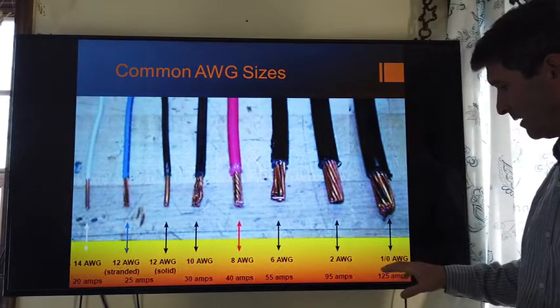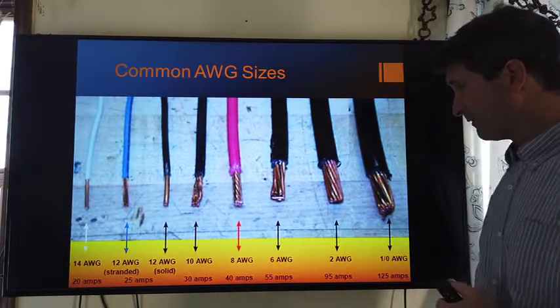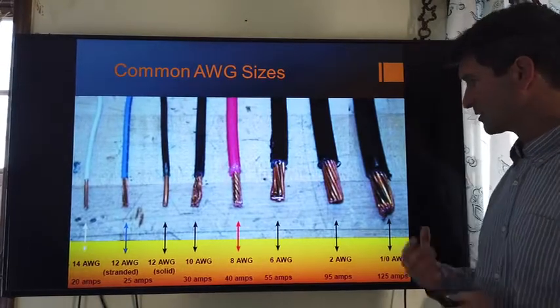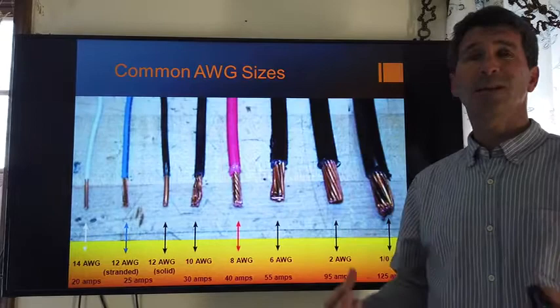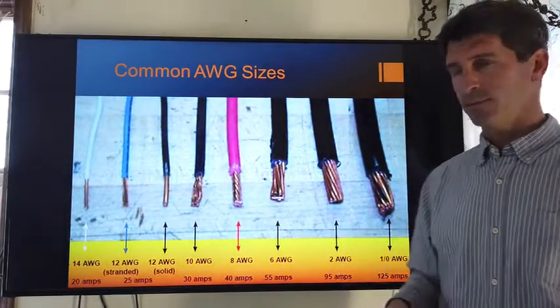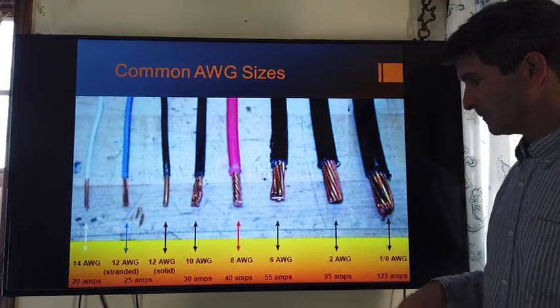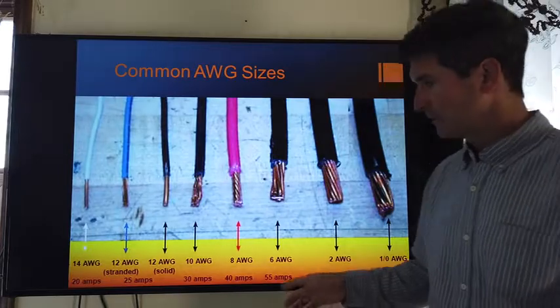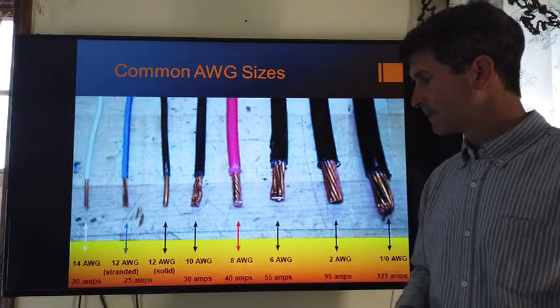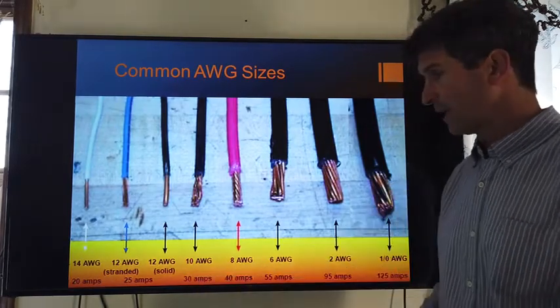But, here is 1 gauge wire that can carry 125 amps. Most homes aren't ready for more than 200 amps. So, your service coming in would probably be aluminum double-out wire rather than single-out wire. Again, for high current appliances, 8 gauge or 10 gauge, here you can see they carry 30 or 40 amps.